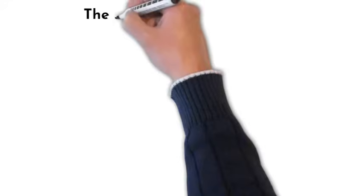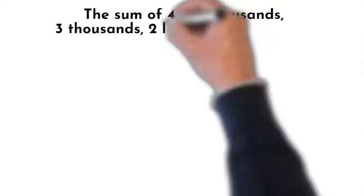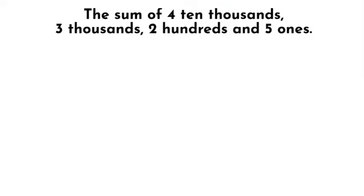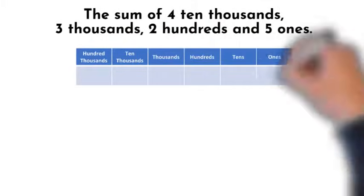Now, let's compose a number. Let's start with our number written as the sum of 4 ten thousands, 3 thousands, 2 hundreds and 5 ones. To best help with composing this number into numeric value, we should use a place value chart again.